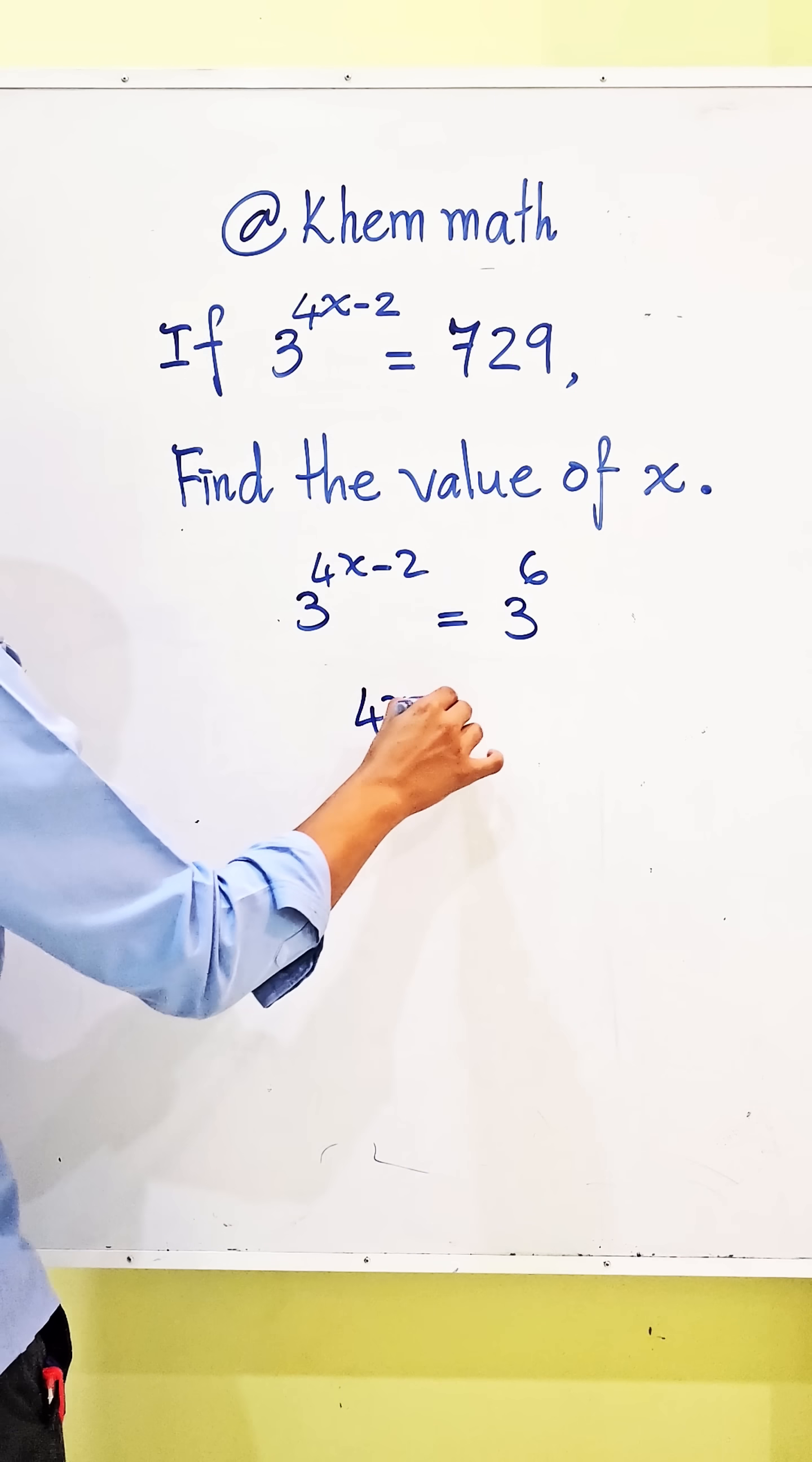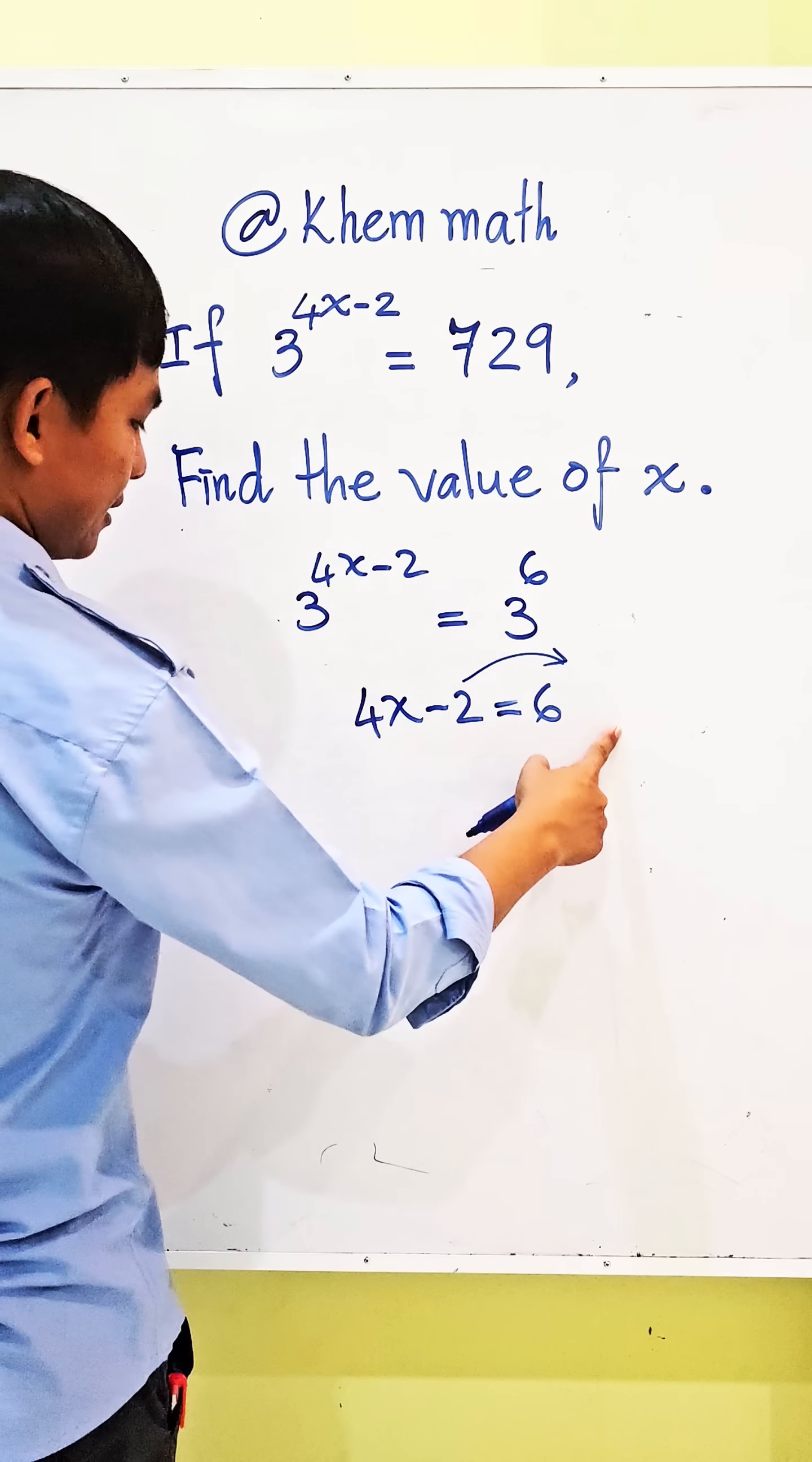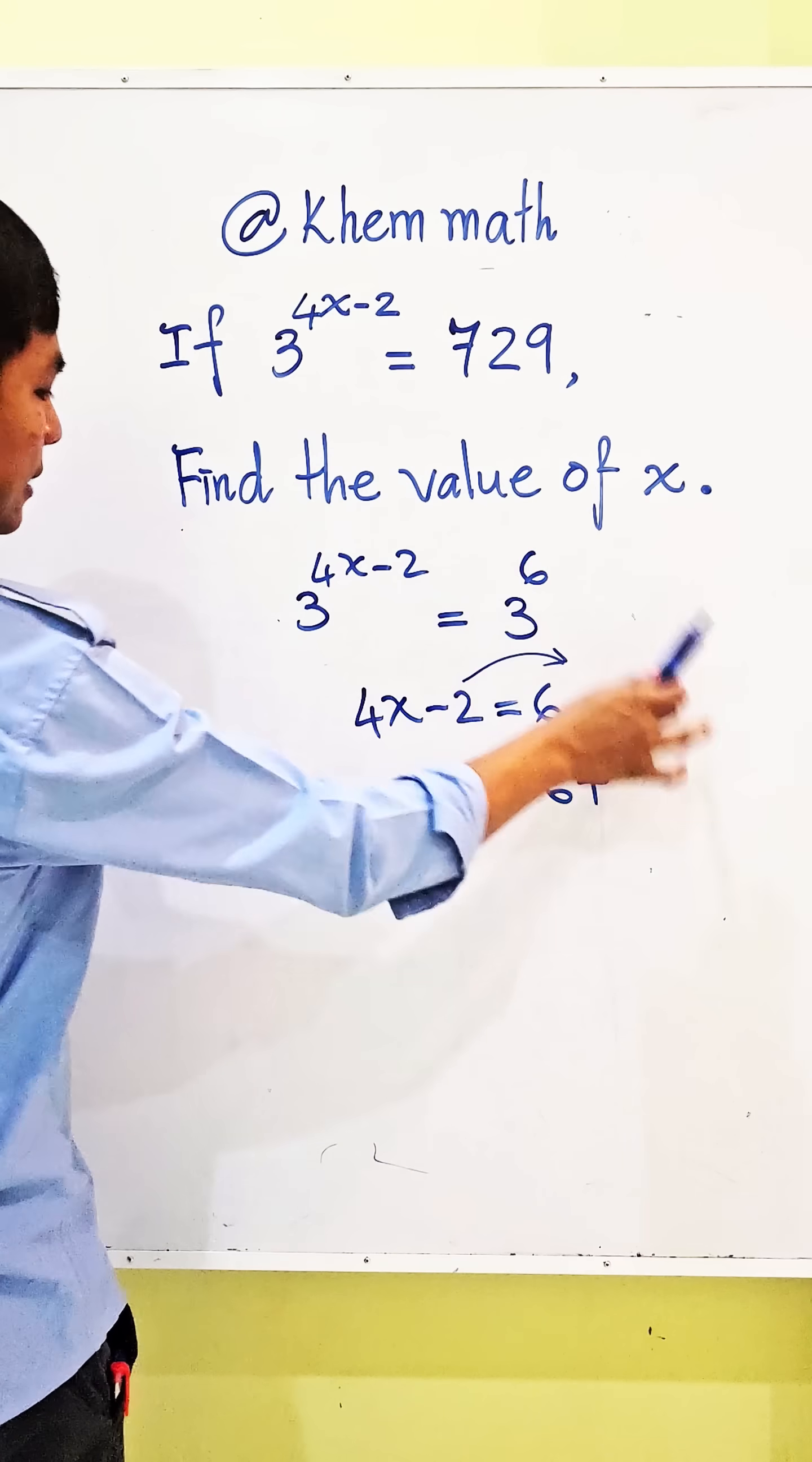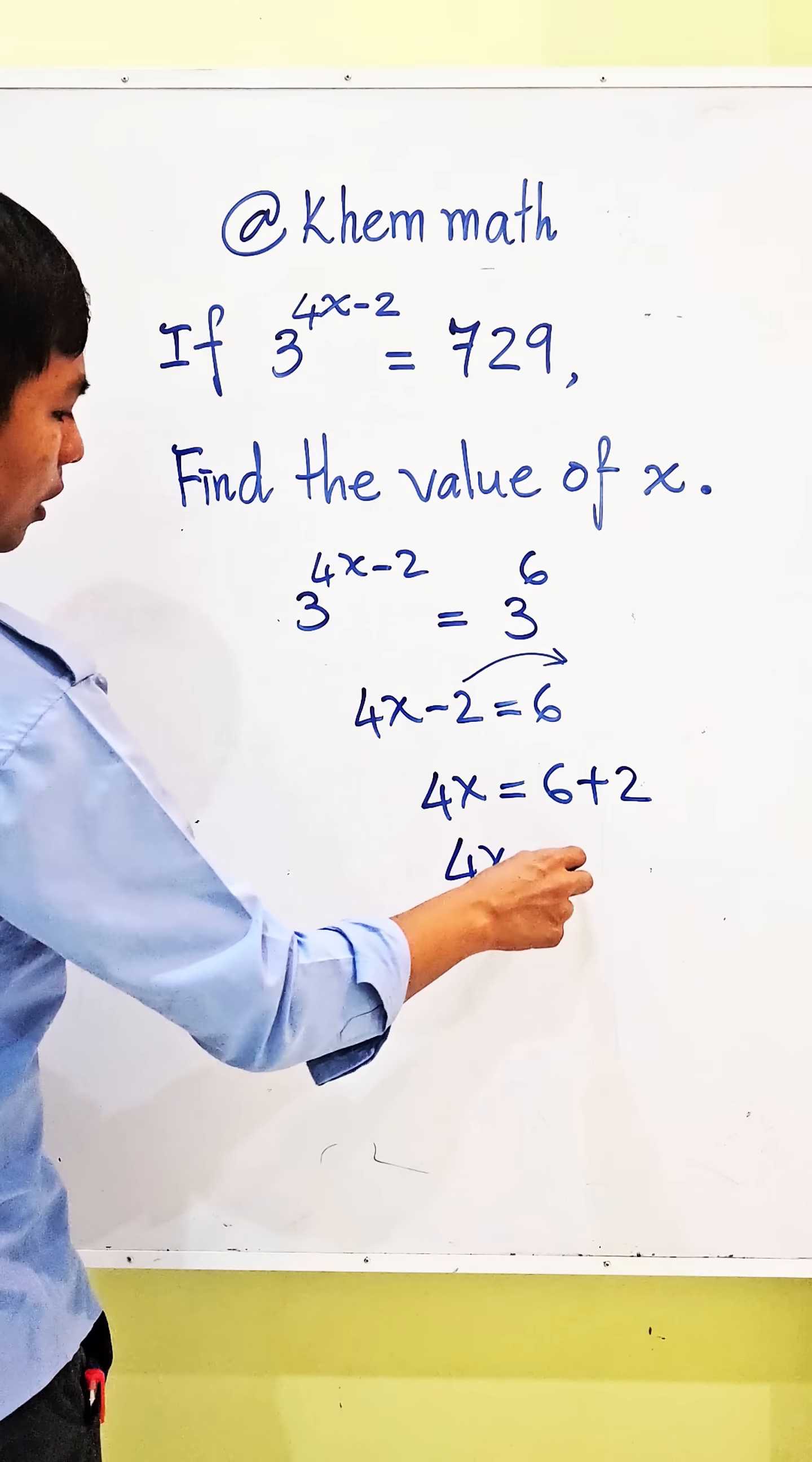4x minus 2 equal 6. And we change negative 2 to the right hand side, we get 4x plus 2. If it's negative, we get it positive. So 4x equals 8.